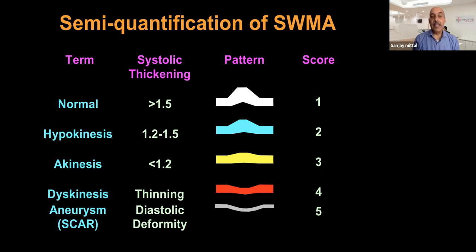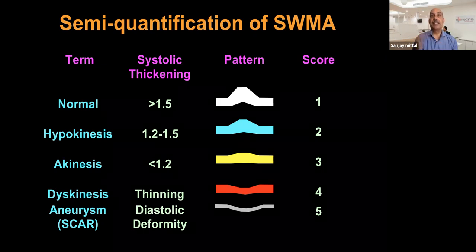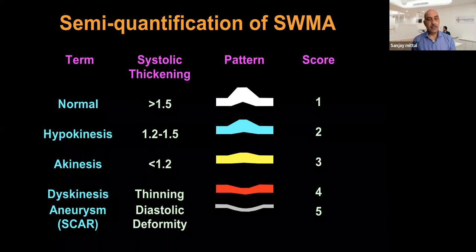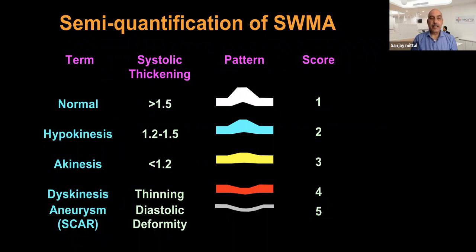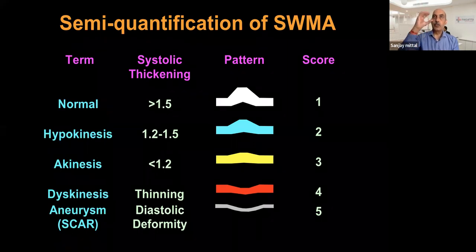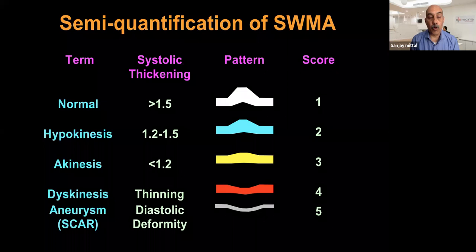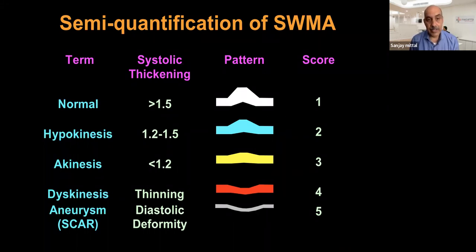Akinesis is when there is no perceptible difference in systolic thickness, and aneurysm as already described. Practically: normal means thickening during systole as expected for a normal ventricle; hypokinesis is thickening present but less than expected or than other segments; akinesis is no perceptible change — some examples will make this clearer.